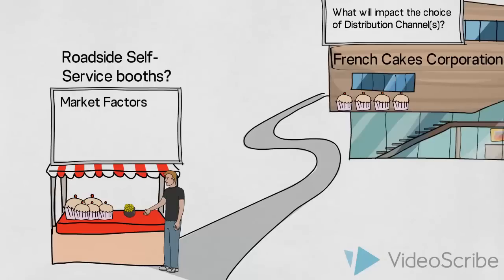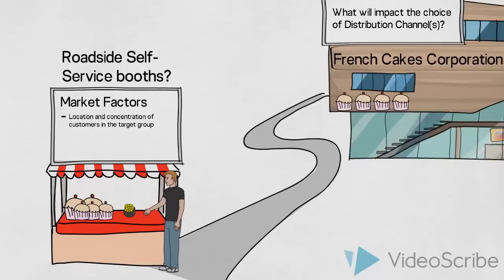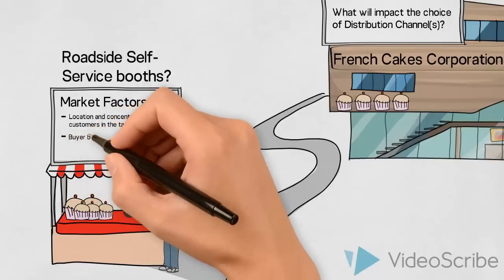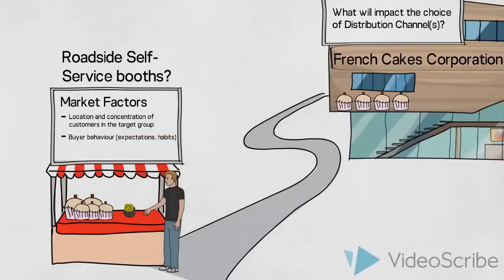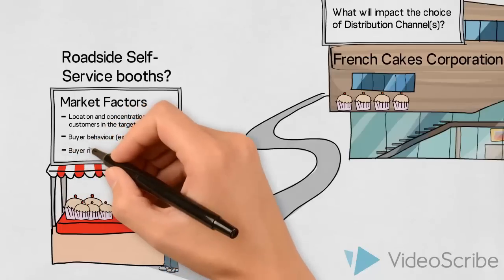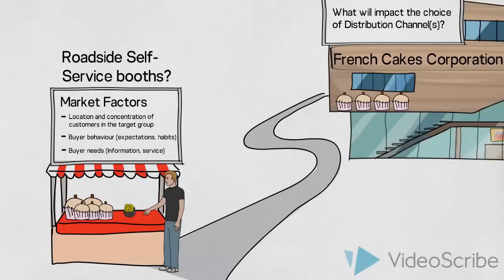Firstly, what is the location and concentration of their customers? Is it likely that they will be able to sell to a suitable amount of customers with this kind of setup? Secondly, do their customers expect to buy these types of cakes and desserts at roadside booths? If not, it could be a challenge to convince them of the value in doing so. Thirdly, we would advise them to consider whether the customers would be able to get the information and service expected when using this type of setup.